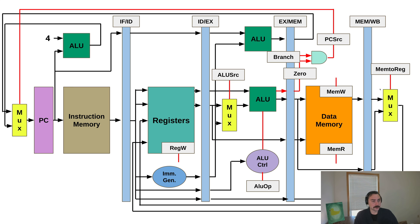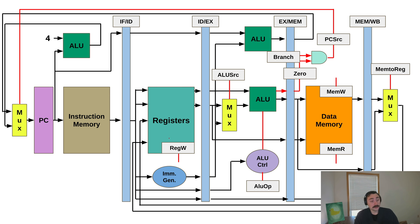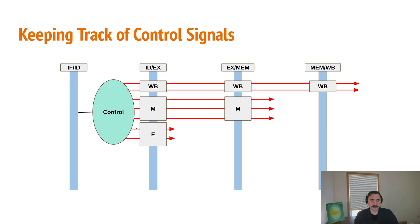In our write-back stage, we have two control signals. One selects our mem-to-reg source — what are we saving to the register file: something from data memory or something from the ALU? The other signal in our write-back stage is our register write signal, controlling whether or not we're going to write to the register file. Remember, not every instruction writes to the register file — a branch-if-equal doesn't write to the register file, and neither does a store instruction. So those are the signals we need to keep track of in these pipeline control registers.